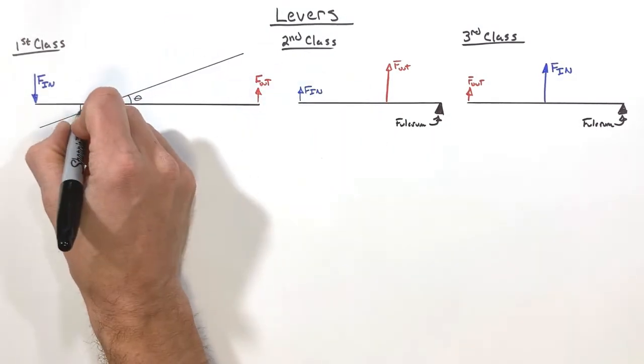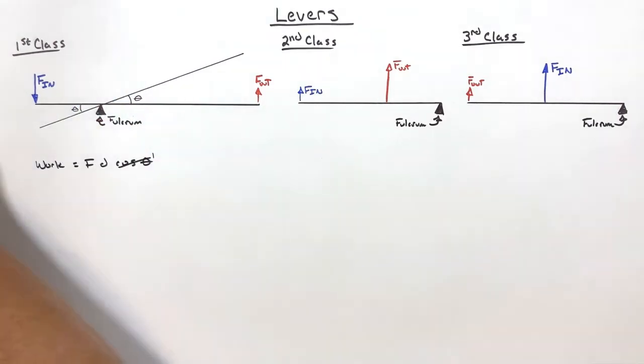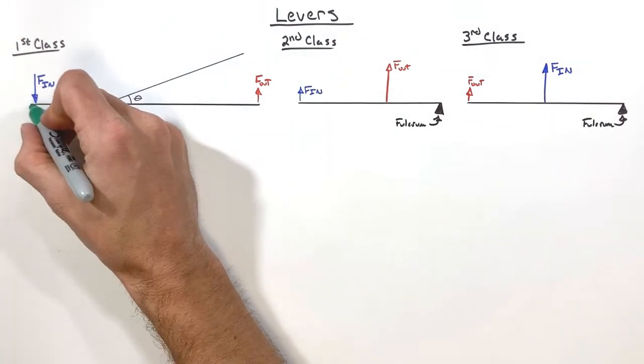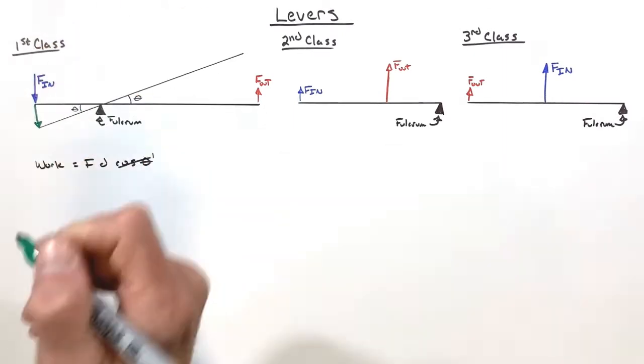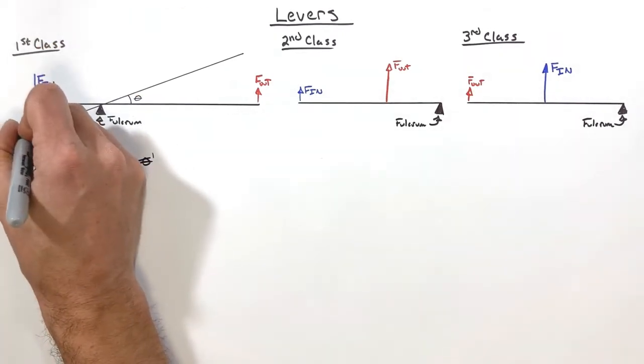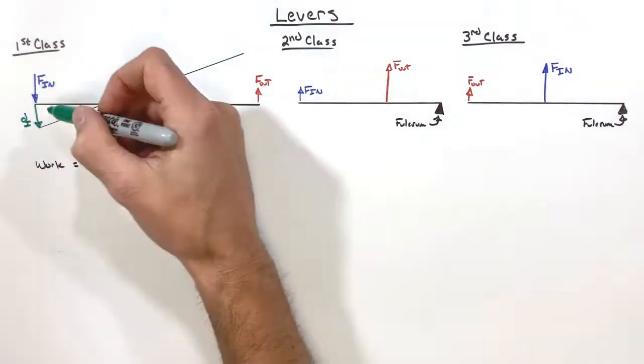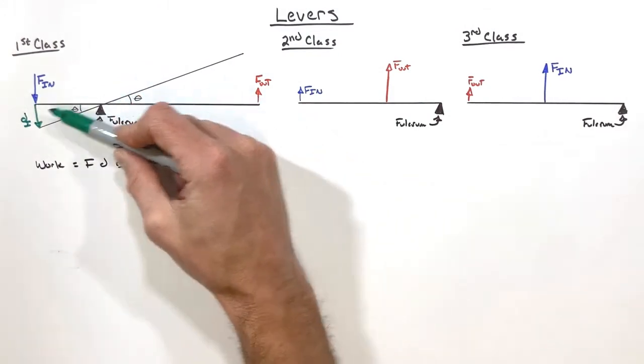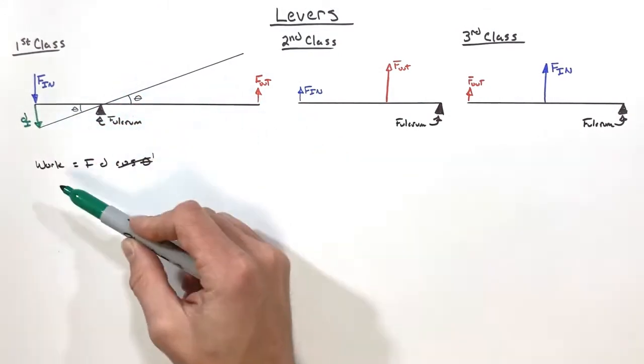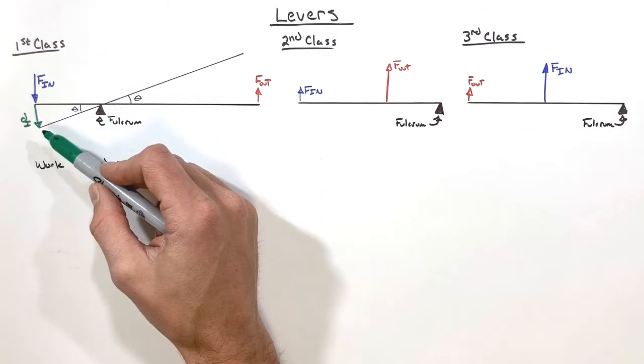Now how large that angle theta is, I really don't care right now. What I'm concerned with is the displacement right here at the end of the lever. This is the displacement on the input side. By providing some force on this lever, or putting a force on the lever over some displacement, work is done. We put energy into the lever.